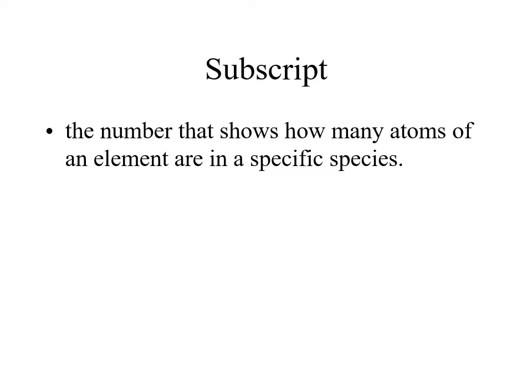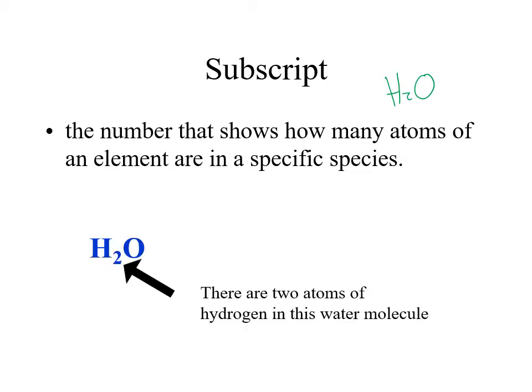The subscripts in the chemical formula tell you how many atoms of that particular element are in that particular species. For example, H2O says there are two hydrogens and one oxygen — we don't write the one for the oxygen, but there is one oxygen. Two hydrogens in this water molecule.